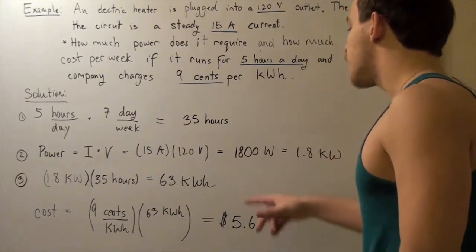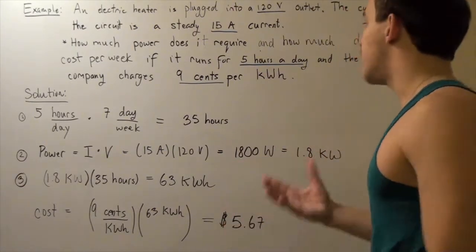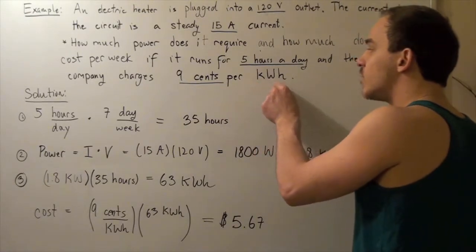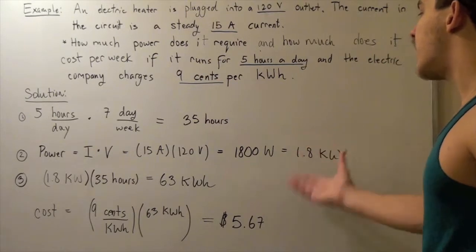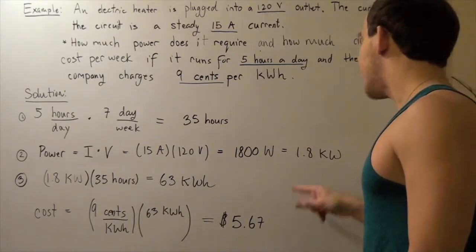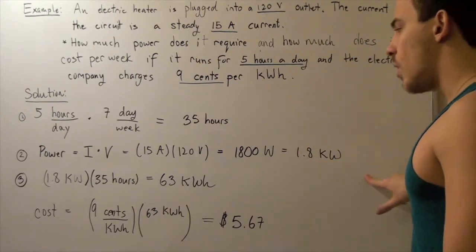Now we must convert watts to kilowatts because we're dealing with kilowatt hours. To convert to kilowatts, we divide by a thousand and get 1.8 kilowatts.